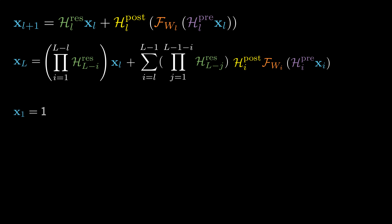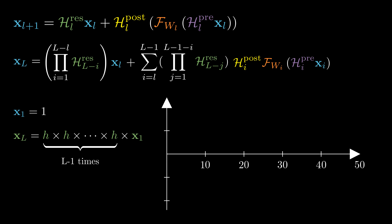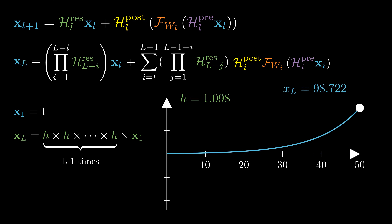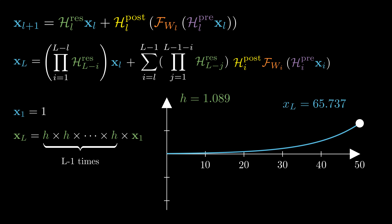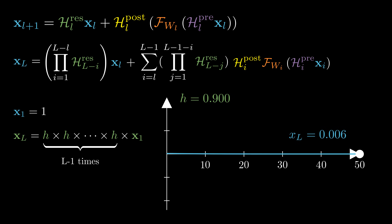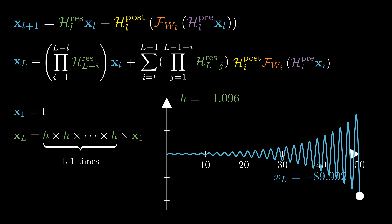Let's illustrate this problem with a simple one-dimensional example. Suppose the initial value is 1 and the feature at layer L involves successive multiplications of a scalar α. When the value of α is 1, we have identity mapping and the output at layer L is still 1. However, if we increase α to 1.1, the output value exhibits a dramatic 100-fold increase. Conversely, when α is less than 1, the output value rapidly decays as it passes through the layers. The instability becomes even more significant when α takes on negative values, causing the output to oscillate dramatically.